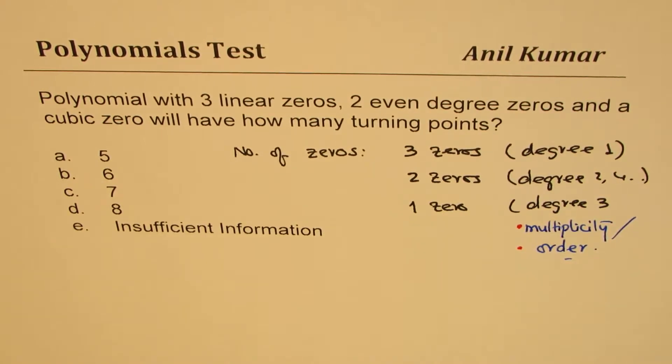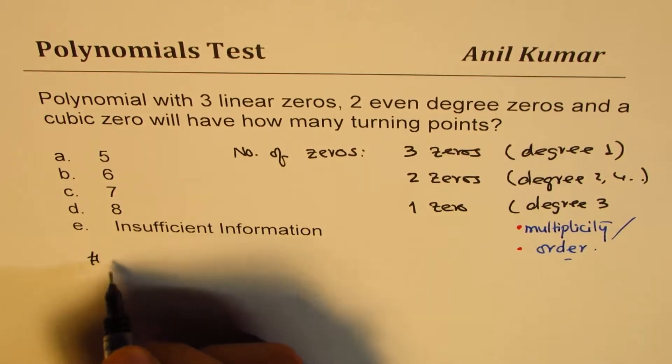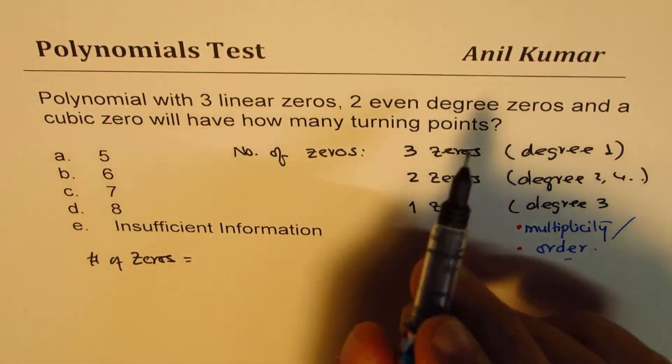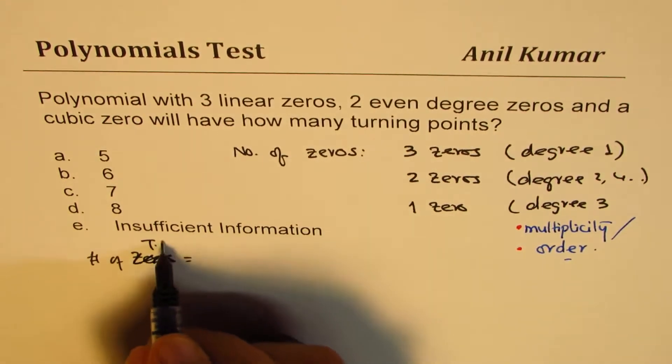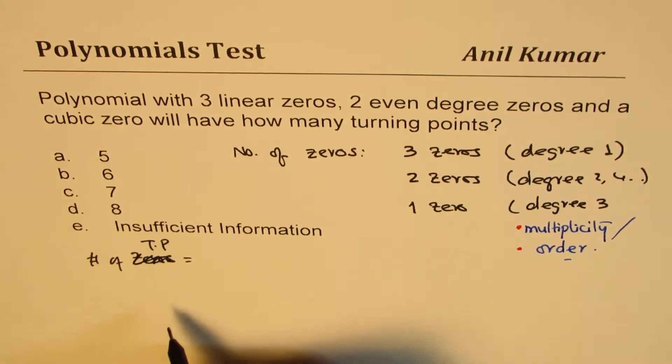You can actually work out and then check with my solution. Well, I'll give you a formula. Number of turning points is actually based on number of zeros.